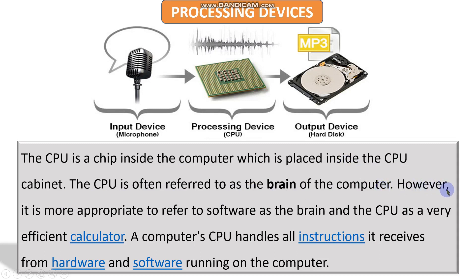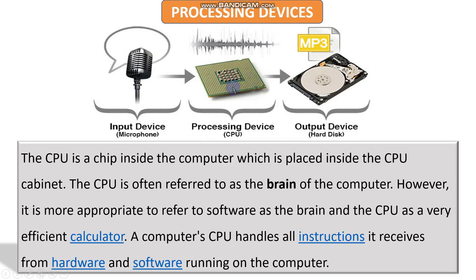However, it is more appropriate to refer to software as the brain and the CPU as a very efficient calculator. A computer is basically designed for calculations. A computer's CPU handles all instructions it receives from hardware and software. As you can see in this picture, the CPU receives data from an input device like a microphone, works on that data, and copies it to an output device or hard disk. This is how the processing device — the CPU — works.